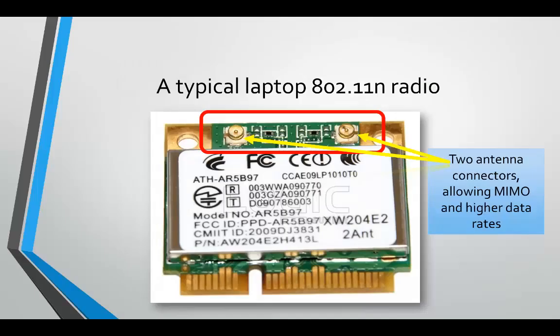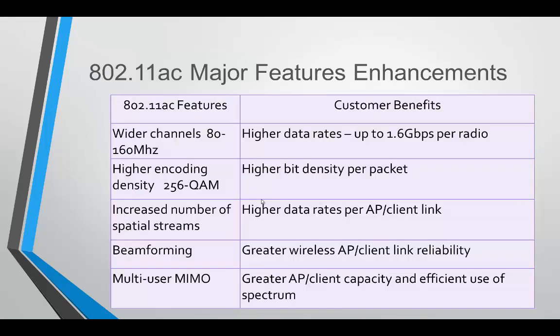Here's a laptop 802.11n radio. Notice the connectors outlined — this shows two connectors allowing two coax cables and two antennas, meaning this particular laptop 802.11n radio can handle spatial streaming. Be careful and check the specs of your laptop or mobile phone, because manufacturers typically won't tell you how many radios are inside. It's critical to find out how many antennas and radios your device has, because that determines whether you can or cannot use spatial streaming.